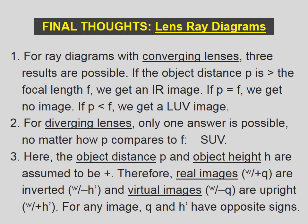For ray diagrams with converging lenses, three results are possible. If the object distance p is greater than the focal length f, we get an inverted real image. If p equals f, we get no image, or an image at infinity. If p is less than the focal length f, we get a larger upright virtual image. For diverging lenses, only one answer is possible — no matter how the object distance p compares to the focal length f — smaller, upright, virtual, every time.